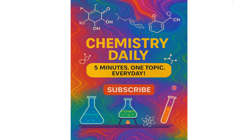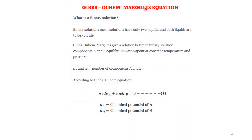Hi learners, today we will learn about an interesting law for binary solution — that is the Gibbs-Duhem-Margules equation for binary solution. Binary solution means the solution has only two liquids and both liquids are volatile.